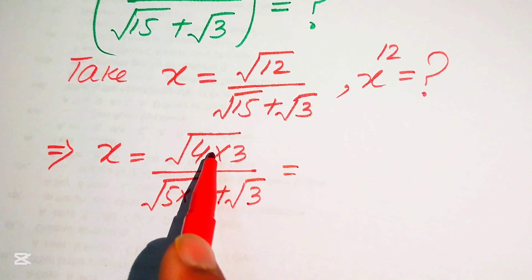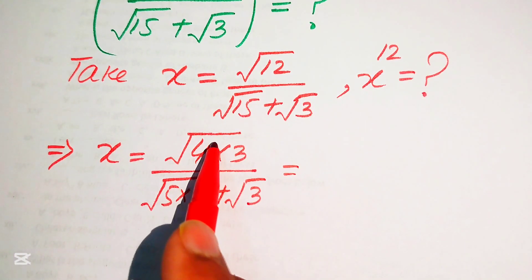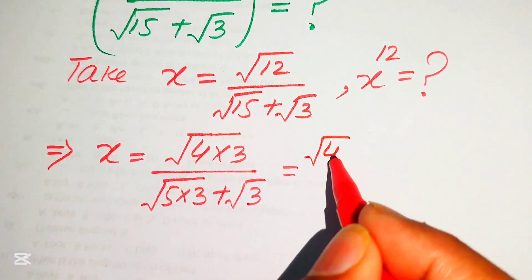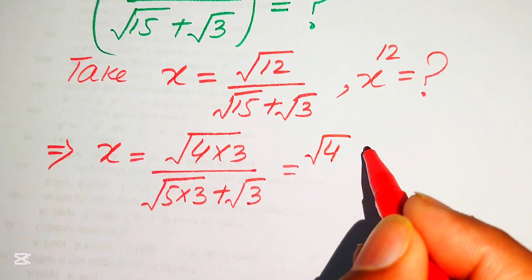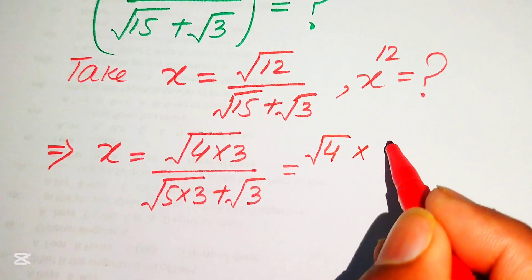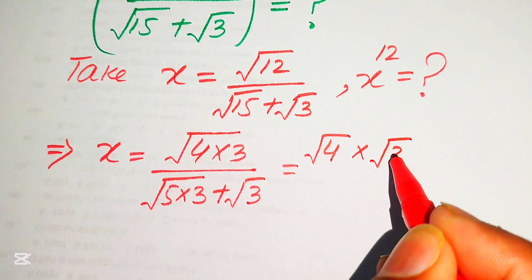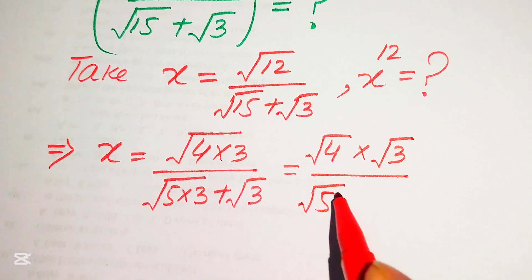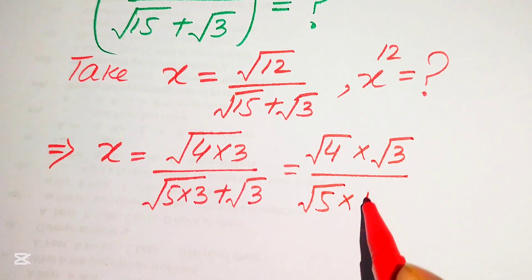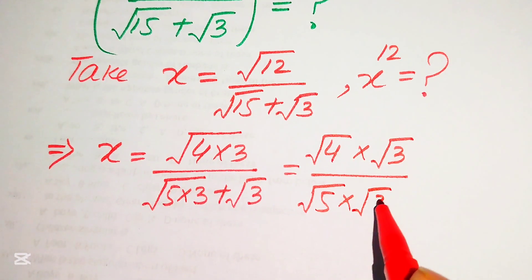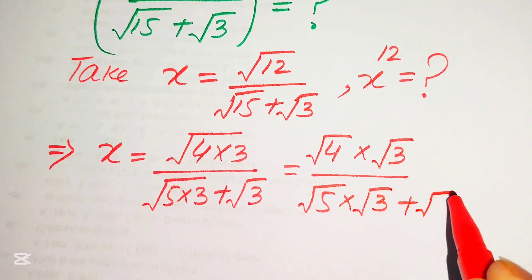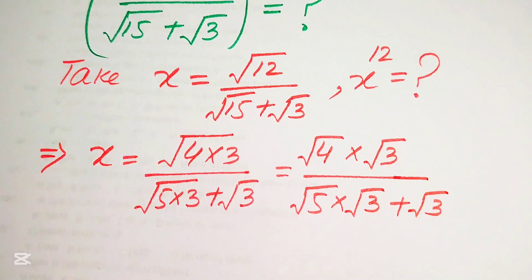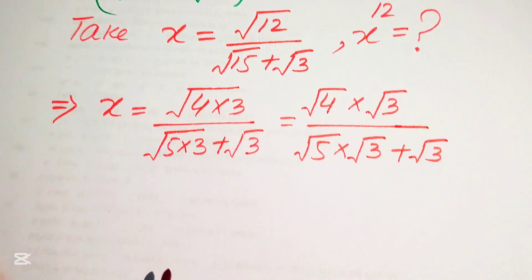We apply the square root separately on both terms: the numerator becomes √4 × √3, and the denominator becomes √5 × √3 plus √3.